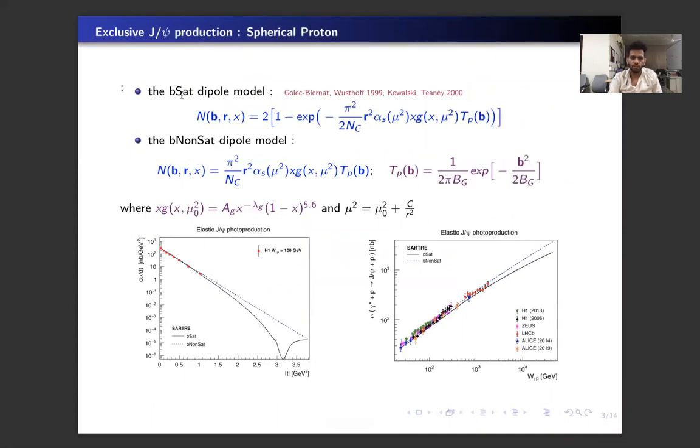We calculate the diffractive photo production using b-cell and b-non-cell dipole model with the spherical proton first without any fluctuation, and we see that for the b-cell case we have these dips in the differential cross-section distribution. On the right-hand side we have the energy dependence of the total cross-section, and we see that both models are in quite good agreement with the current HERA data.